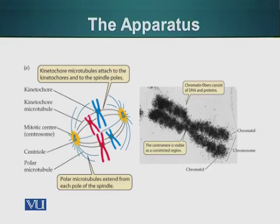The two types of microtubules that come out of the centrosome are the kinetochore microtubules. These microtubules are the ones which are attached to the chromosomes at a specific region called the kinetochore. The other microtubules that are not attached to the kinetochore are called the polar microtubules.